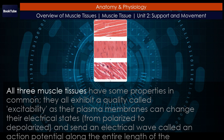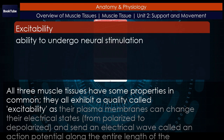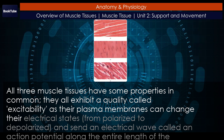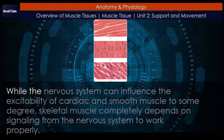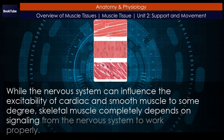All three muscle tissues have some properties in common. They all exhibit a quality called excitability, as their plasma membranes can change their electrical states from polarized to depolarized, and send an electrical wave called an action potential along the entire length of the membrane. While the nervous system can influence the excitability of cardiac and smooth muscle to some degree, skeletal muscle completely depends on signaling from the nervous system to work properly.